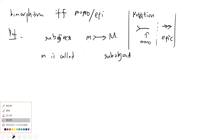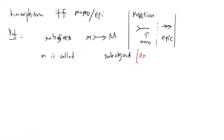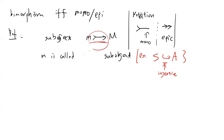An example: if S is a subset of A, then you can write S hooking into A using this notation. By definition this is a monomorphism because the inclusion is injective. So you can view monomorphism as a generalization of subsets, subgroups, or subspaces.